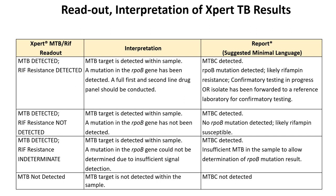How do you interpret Xpert TB results? If it reads MTB detected, RIF resistance detected — the MTB target is detected within the sample, a mutation in the rpoB gene has been detected, and a full first- and second-line drug panel should be conducted. If MTB detected, RIF resistance not detected — MTB is detected but no mutation in the rpoB gene. It could be indeterminate if the rpoB gene could not be determined due to insufficient signal detection, or MTB not detected within the sample.